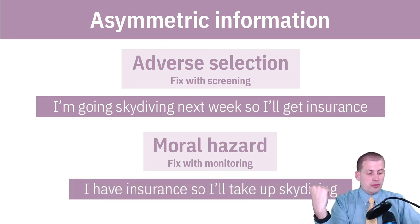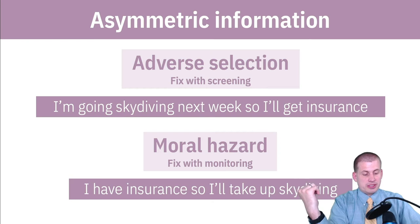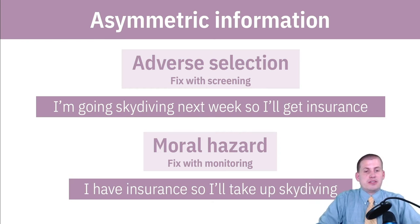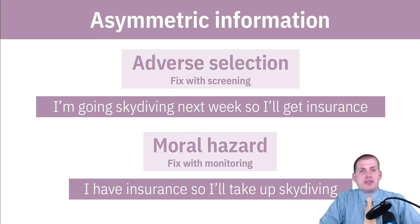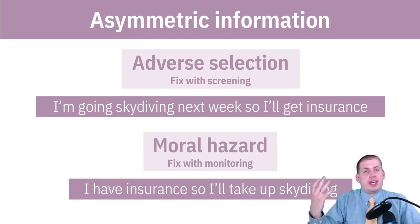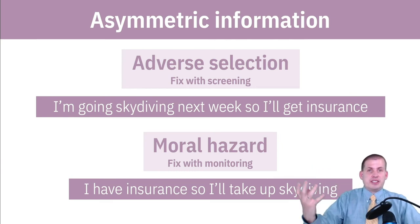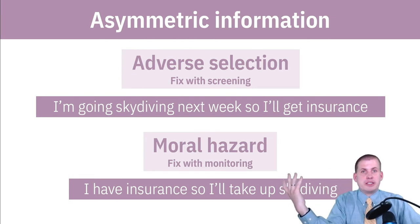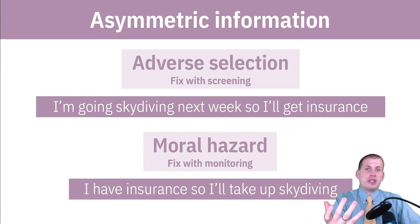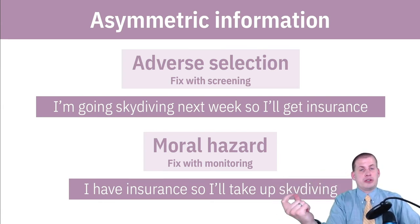The moral hazard example here is: if you have insurance and know you're covered, you'll take up skydiving, and if you get hurt, oh well, you have life insurance. If you're an insurance company, one way to monitor that is to make sure people don't go skydiving — which is an issue for personal freedom reasons, but that's one way to fix it. The car insurance monitoring device — that's how you fix moral hazard. You're actually being monitored, so they know your behavior is good and can charge you less.